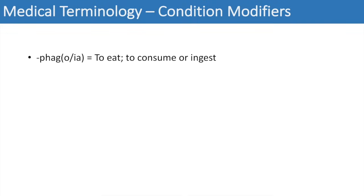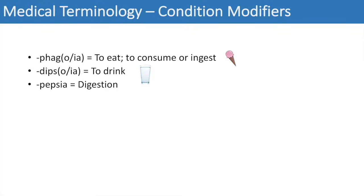The next set is condition modifiers. 'Phagia,' 'phagio,' or 'phago' simply means to eat, consume, or ingest — think of dysphagia, a problem with eating. 'Dipsia' means to drink; polydipsia means you're drinking an above-normal amount of fluids. 'Pepsia' means digestion — dyspepsia is a problem in digestion. 'Emesis' means vomiting; hematemesis is vomiting of blood. 'Uria' means urination — polyuria means urinating too much, or nocturia means you urinate at night.